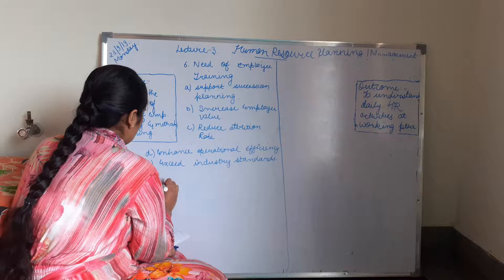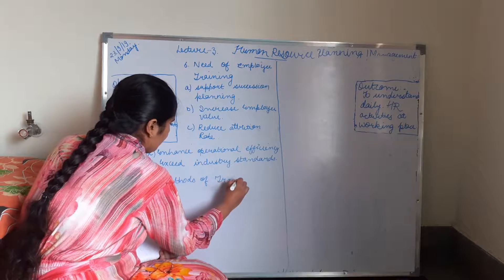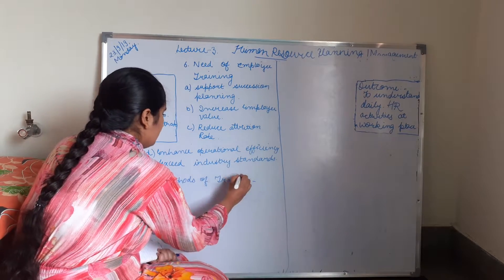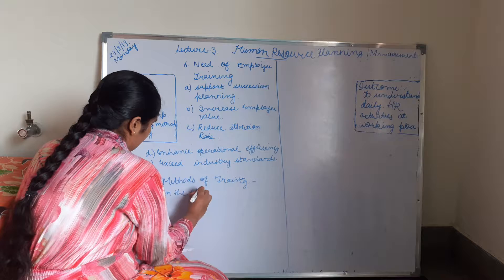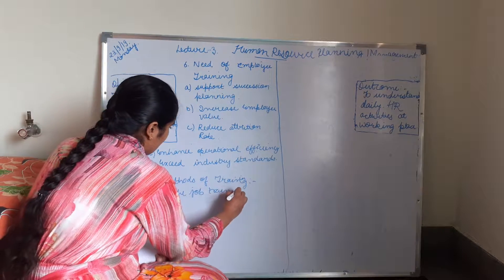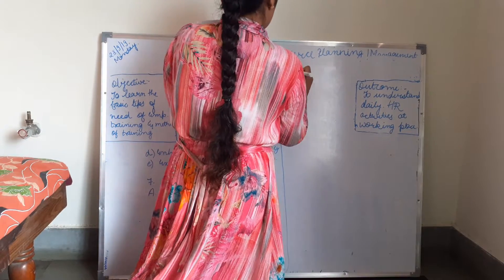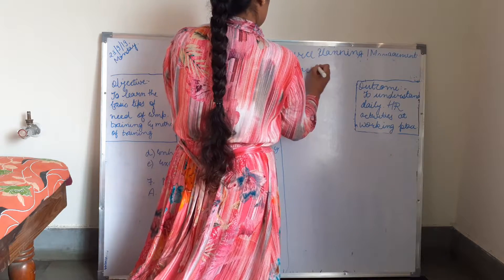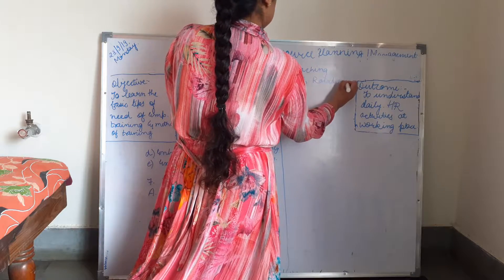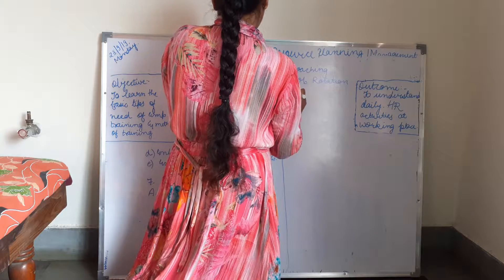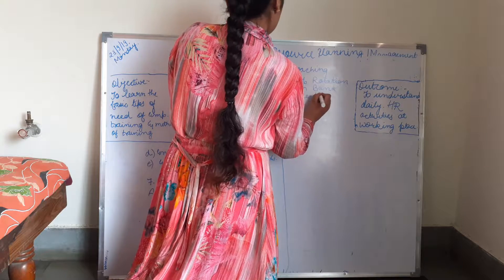Seventh point: methods of training. A. On the job training. Point A: coaching and job rotation. Examples include in-band, accent, and TSE.